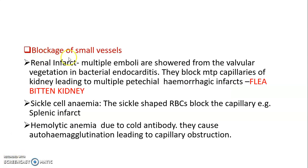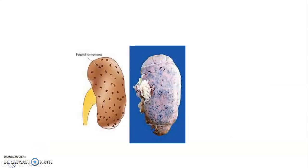In arterial and venous occlusions there can be blockage of small vessels leading to renal infarcts. When multiple emboli are showered from valvular vegetations in bacterial endocarditis, they block multiple capillaries of the kidney, causing multiple petechial hemorrhagic infarcts known as flea-bitten kidney. These are the multiple hemorrhagic petechiae.